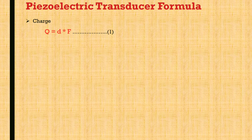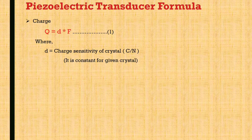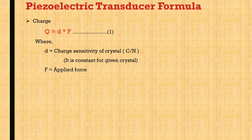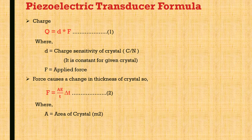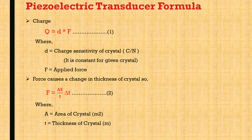The piezoelectric transducer formula: charge q is equal to d multiplied by f, where d is the charge sensitivity of the crystal — it is constant for a given crystal — and f is the applied force. Force causes a change in thickness of the crystal, so we define force f as equal to A·E divided by t, multiplied by delta t, where A is the area of the crystal, t is the thickness of the crystal, and E is Young's modulus.